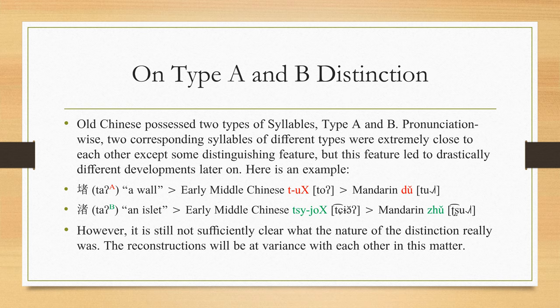However, each particular reconstruction has to render that distinction somehow, because collapsing those distinctions will create a language impossible to connect with modern varieties of Chinese. So we'll pay attention to this feature from now on.